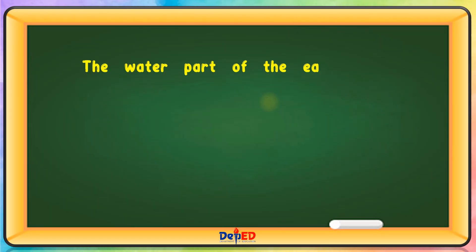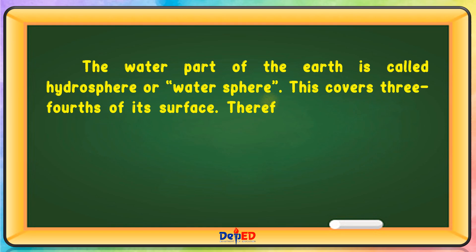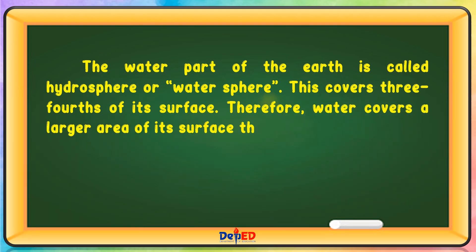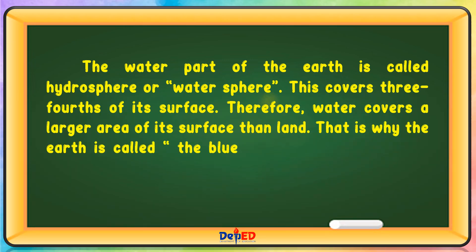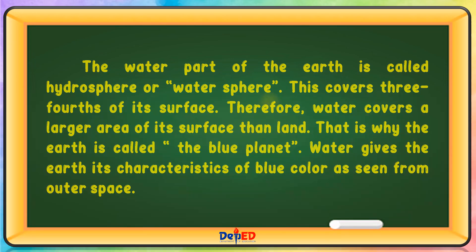The water part of the earth is called the hydrosphere or watersphere. This covers three-fourths of its surface, so water covers a larger area than land. That is why the earth is called the blue planet — water gives the earth its characteristic blue color as seen from outer space.